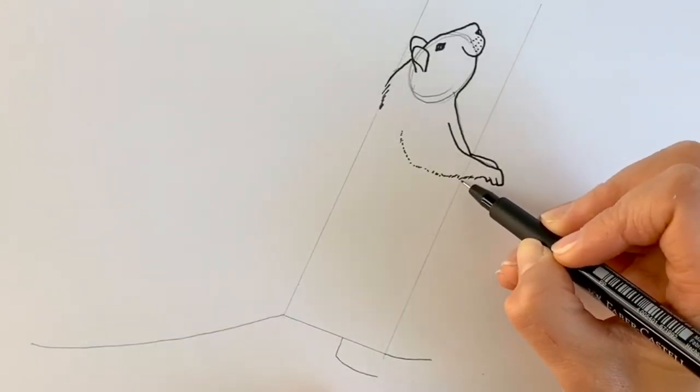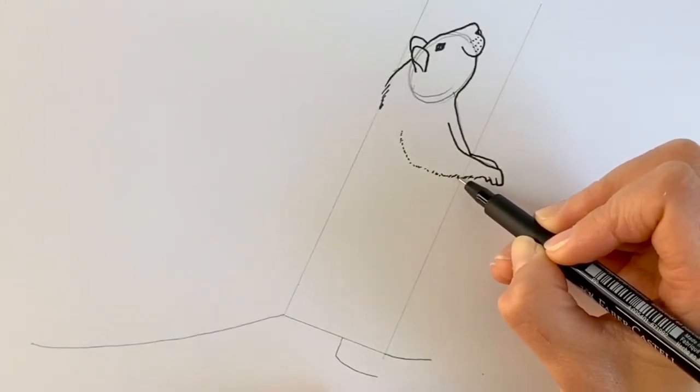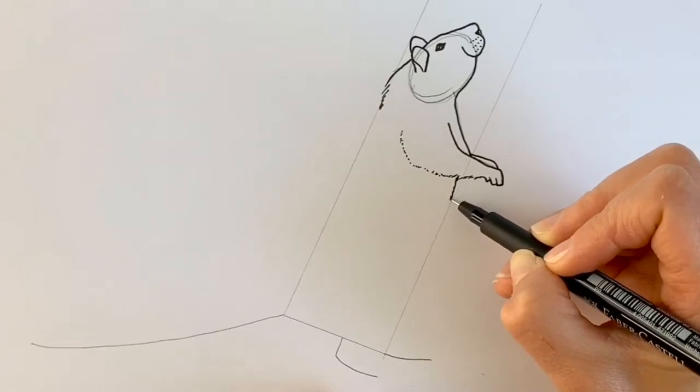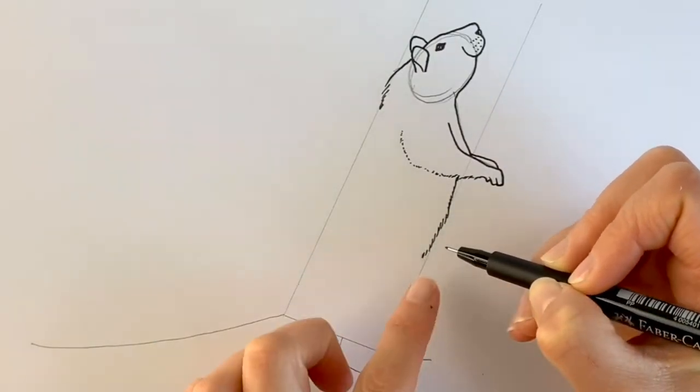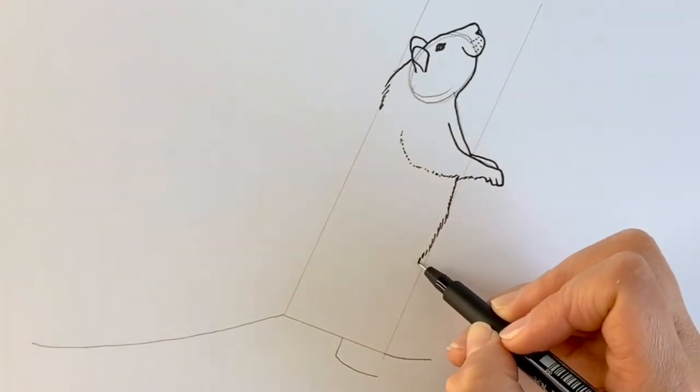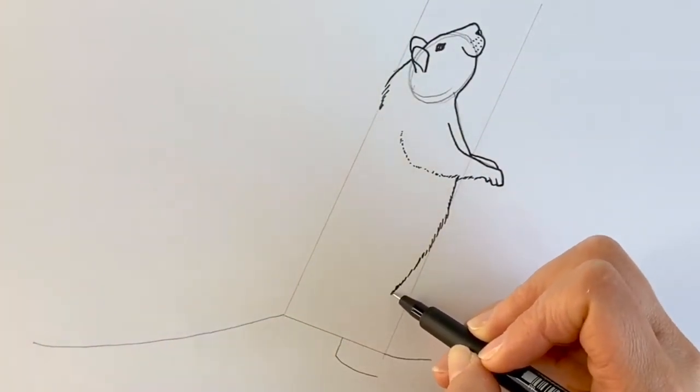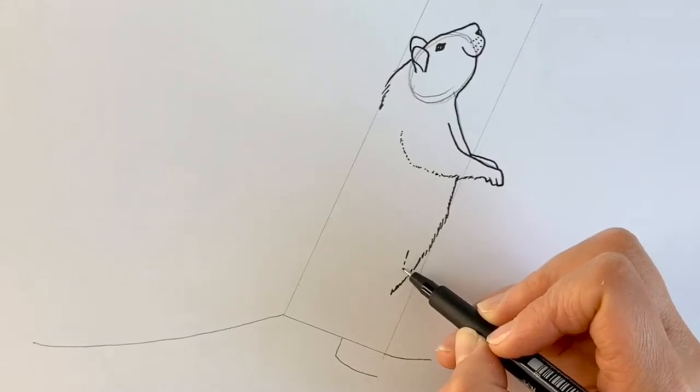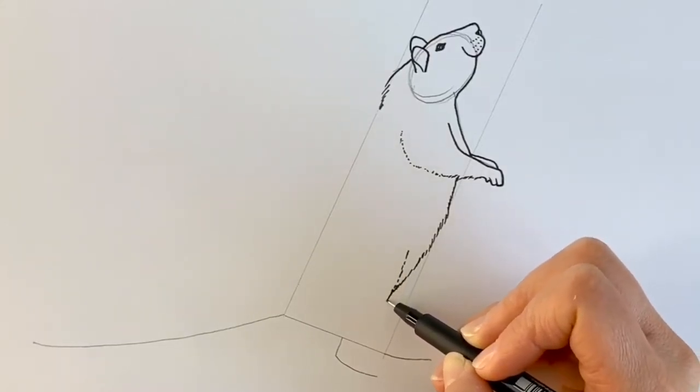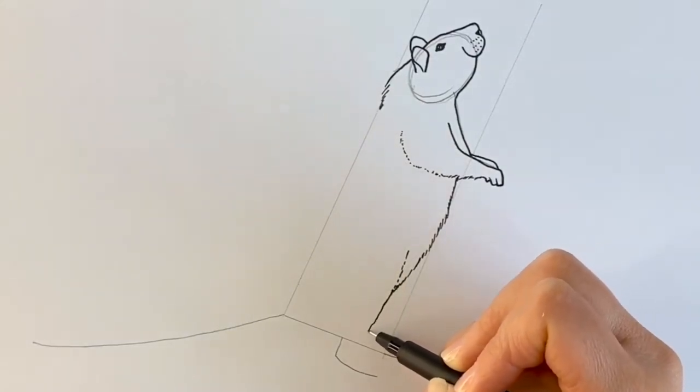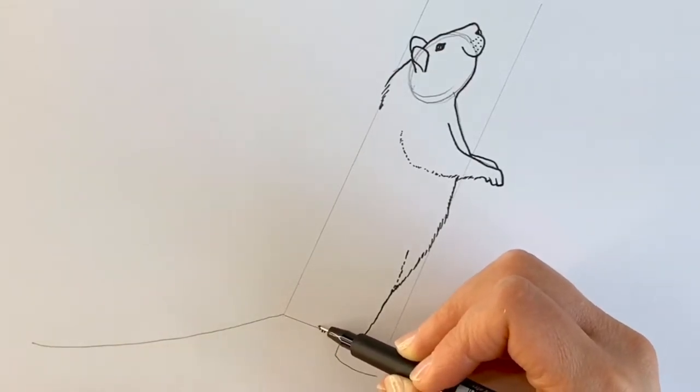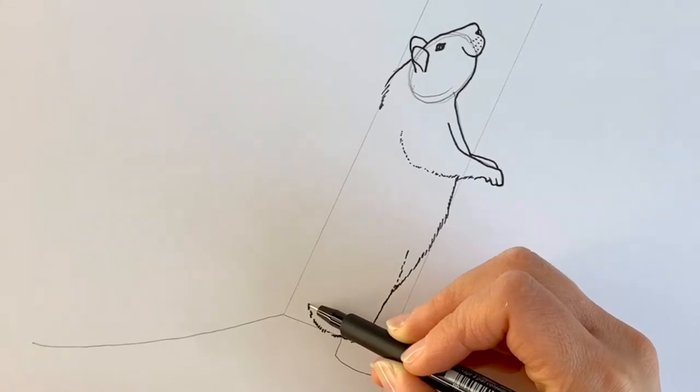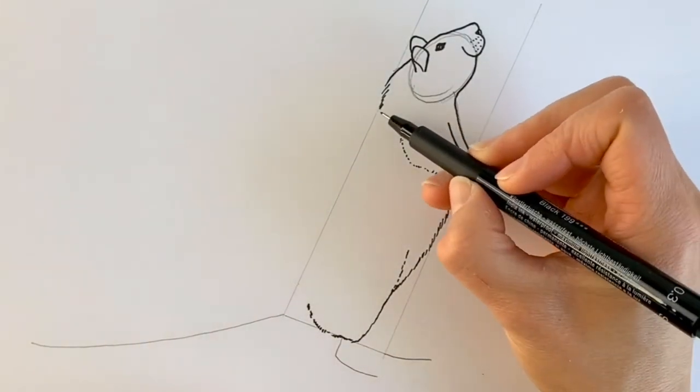Now for the tummy. Coming down here, the tummy's coming all the way down. And then we're going to veer slightly inwards here. Going to go slightly higher and come all the way down till I hit the bottom of that rectangular shape. Then I'm going to carry on with these little dashes going upwards like that.